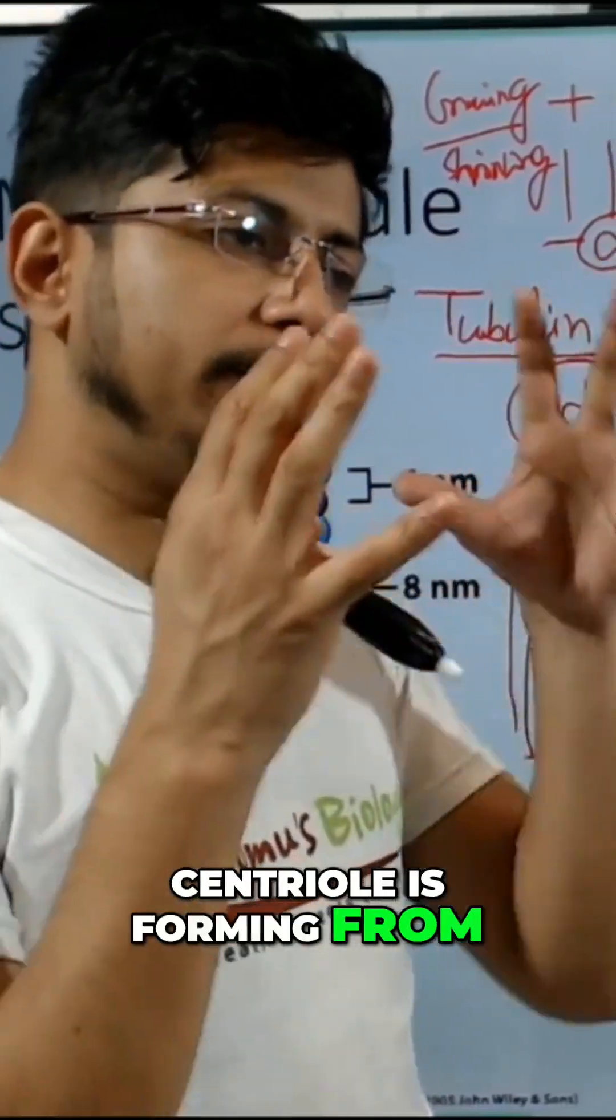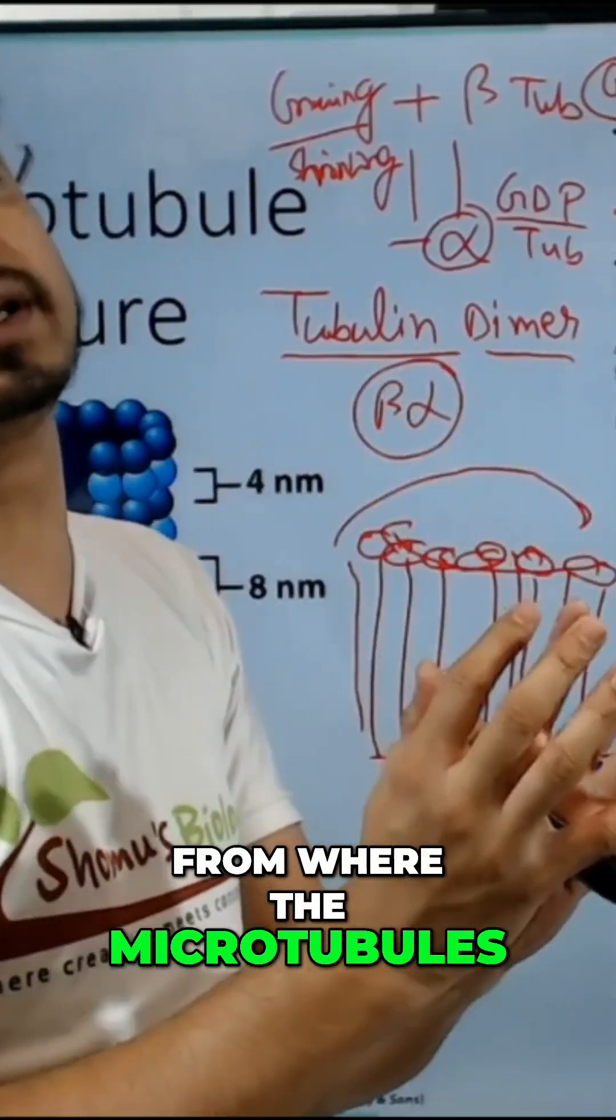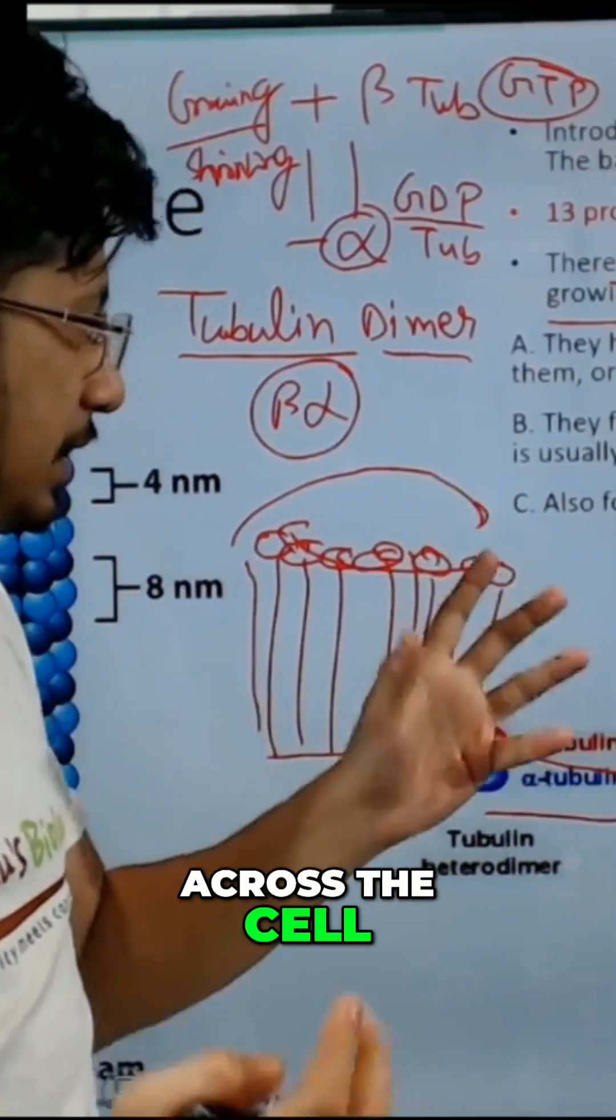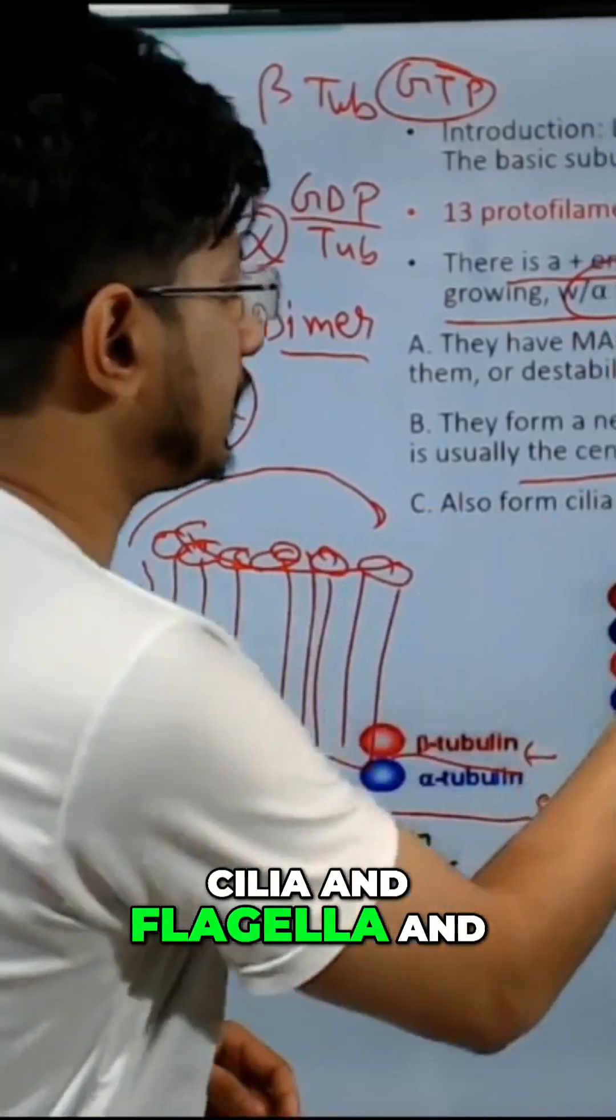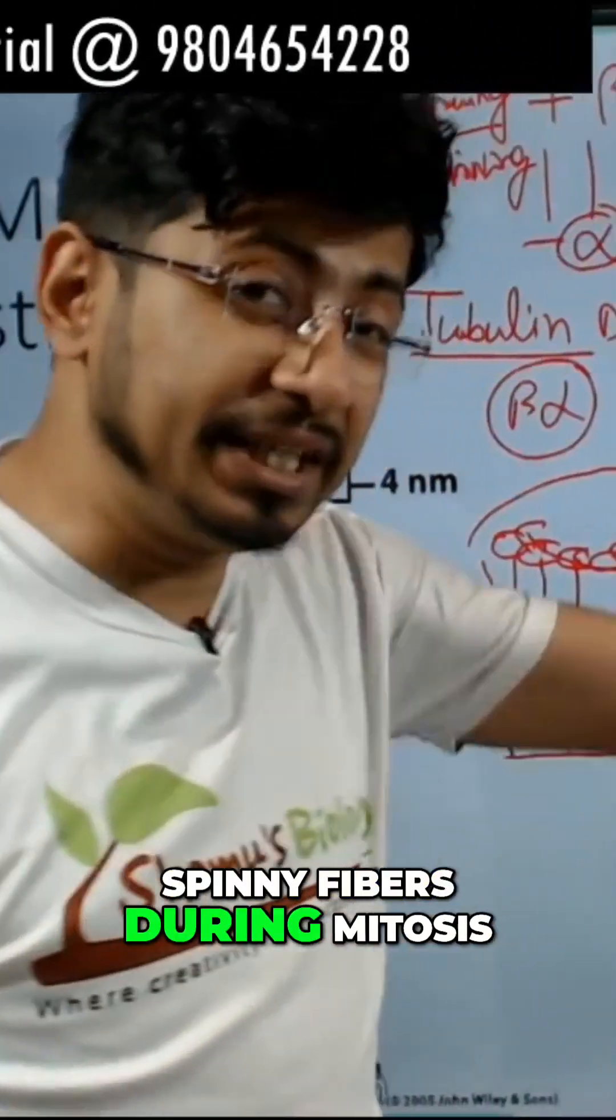The centriole is the microtubule organizing center, because that is the place from where microtubules originate and spread across the cell. It also forms cilia, flagella, and spindle fibers during mitosis.